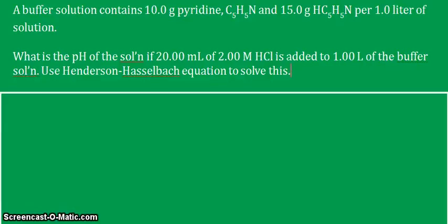Hello, welcome back to another video tutorial on buffer solutions. We're now trying to solve another problem on buffer solutions, which is related to the previous videos. We have a buffer made by mixing 10.0 grams of pyridine with 15 grams of its conjugate acid in one liter of solution. In this third question, we are asked: what will happen to the pH if 20 ml of a 2.00 molar hydrochloric acid is added to one liter of the buffer solution? We will solve this using the Henderson-Hasselbalch equation introduced in the previous video tutorial.